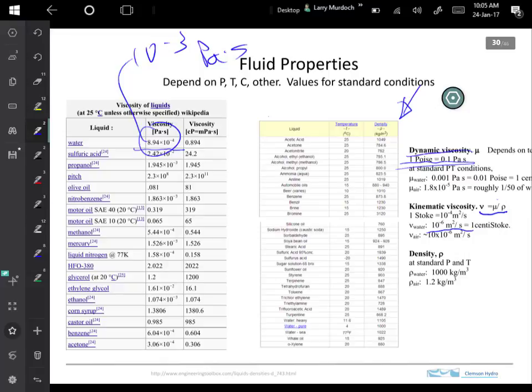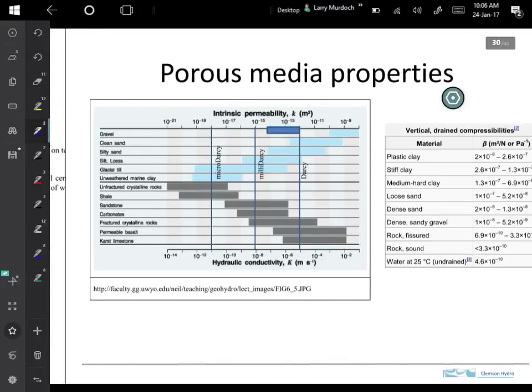So meters squared per second we recognize as a unit of diffusivity and then density I think everybody's familiar with, kilograms per cubic meter, so those are the fluid properties that will need to know.